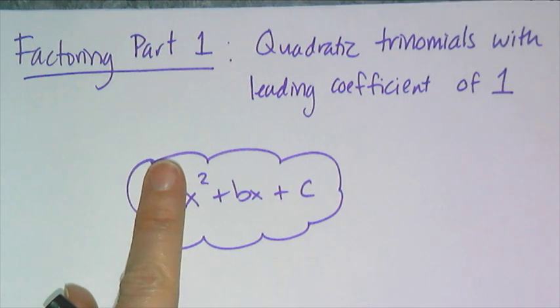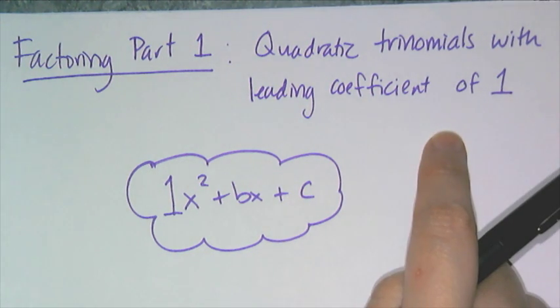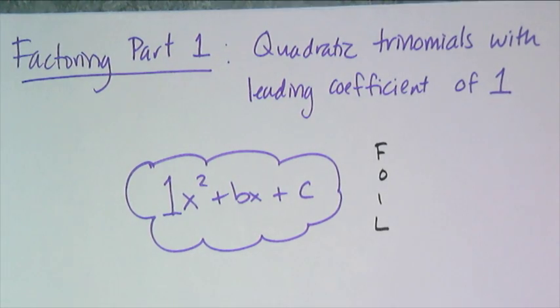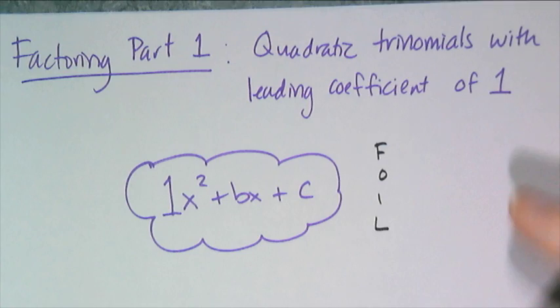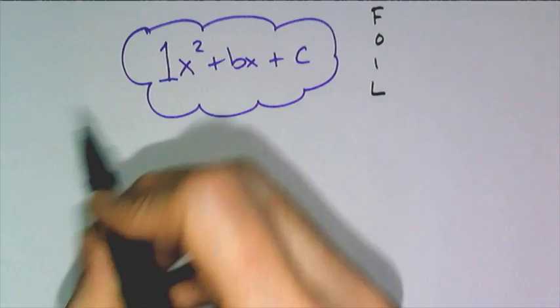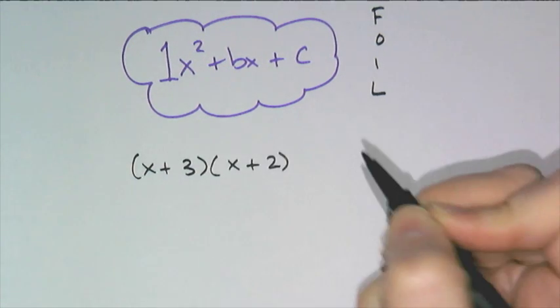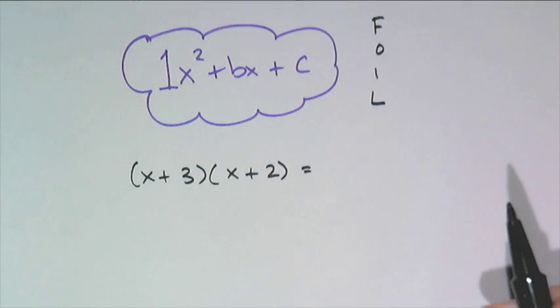And the key to factoring is understanding the multiplication that created your polynomial, which in the case of a quadratic trinomial with leading coefficient of 1 is FOIL. Or you can think of it as Leo B, but I'm going to be using FOIL all the way through this to do my explanation. So let's just quickly look at just some really basic binomial times a binomial and see where the quadratic trinomial comes from.